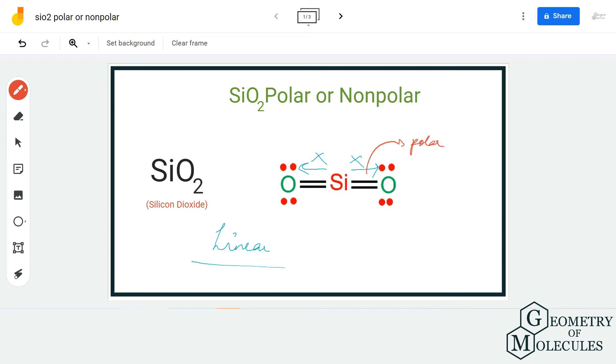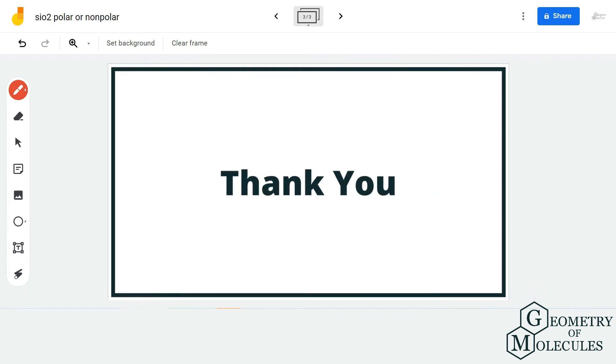a nonpolar structure. Whenever there is a symmetrical molecule in which atoms are arranged symmetrically around the central atom, the dipole moments cancel out each other, and as a result, there is a net dipole moment of zero in this molecule. Hence, this molecule is a nonpolar molecule, and I hope this video helps you understand.